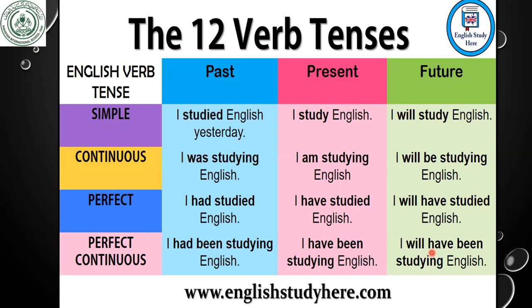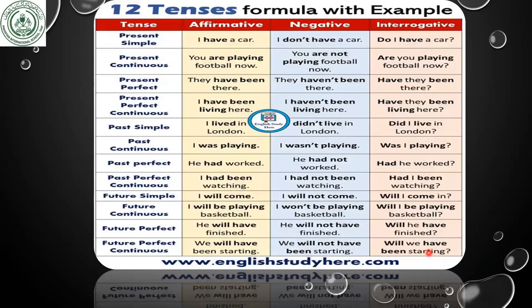For translation, dear students, you must have a grip on tenses. Here again in the table you can see: present simple, present continuous, present perfect, present perfect continuous. And then types of sentences — affirmative, like 'I have a car' or 'You are playing football now'; negative, like 'I don't have a car' or 'You are not playing'; and interrogative, meaning a question, like 'Do I have...?' So we have three types of sentences: affirmative, negative, and interrogative. Pakistani students especially must be very familiar with these, because you have a Urdu passage for translation.